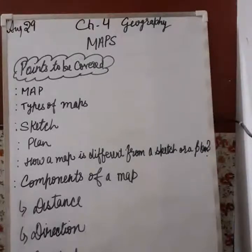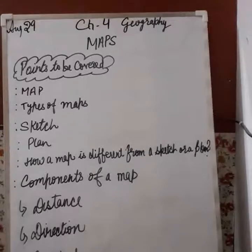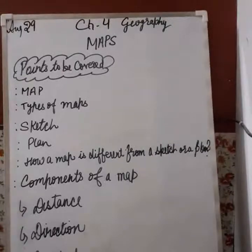There are three types of maps: physical maps, political maps and thematic maps. A physical map shows the natural features of the earth — the relief features such as mountains, plateaus, plains, rivers, oceans, lakes and vegetation.